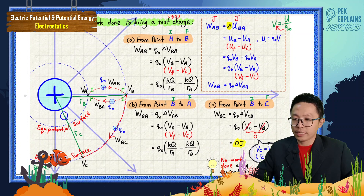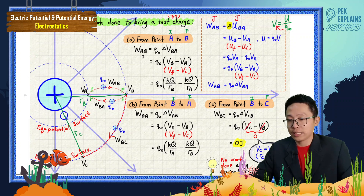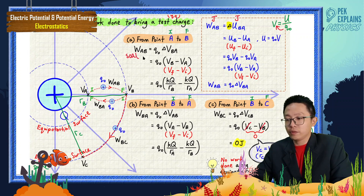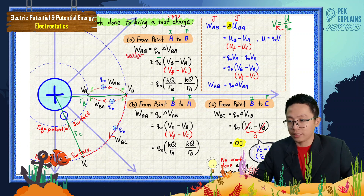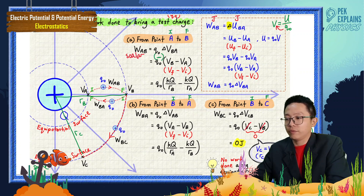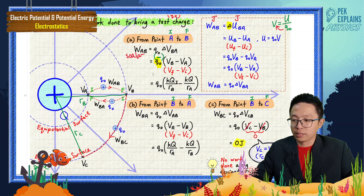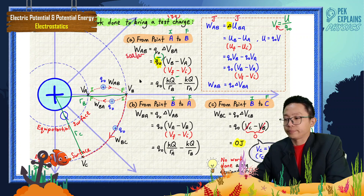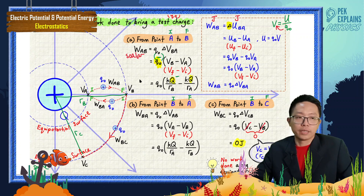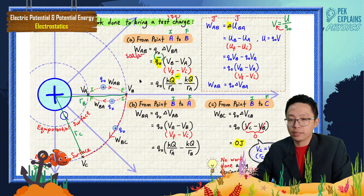Also remember: work done is a scalar quantity. That means if the test charge is negative, you must substitute the negative sign. Similarly, if the point charge Q is negative, you must also substitute the negative sign in your calculation.